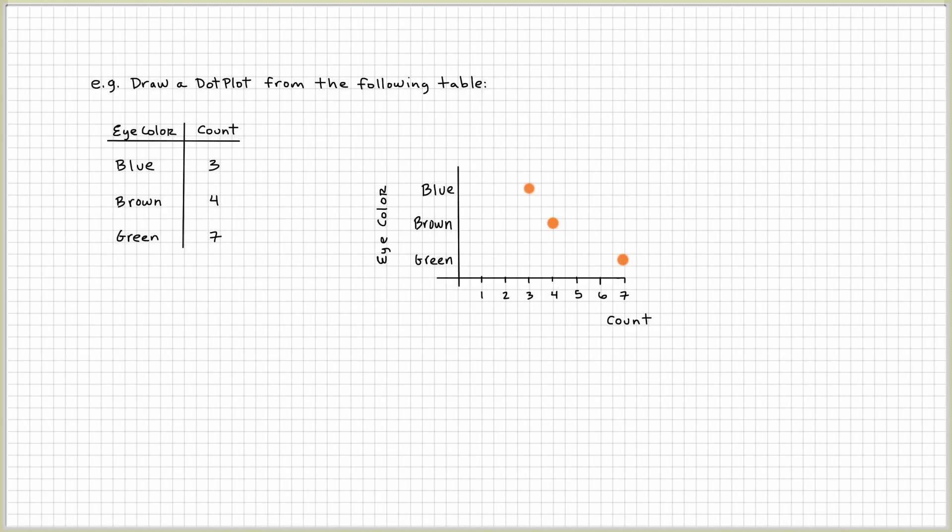Sometimes people use categorical data, right, categorical variable in a dot plot instead of a bar graph because it just looks less cluttered. Okay. Let's try the next problem.